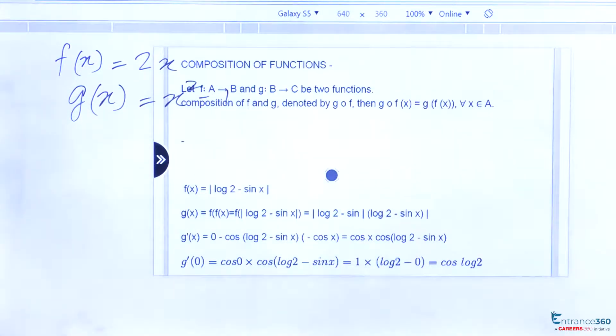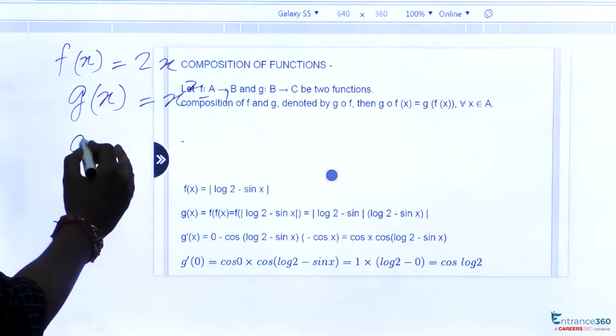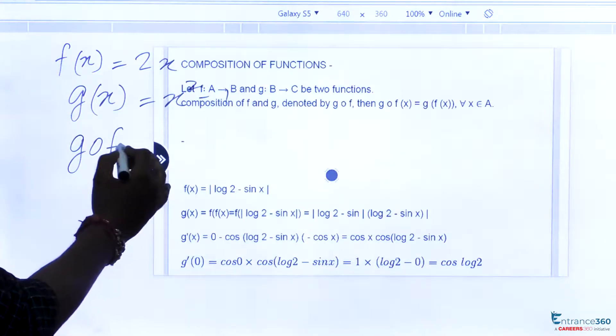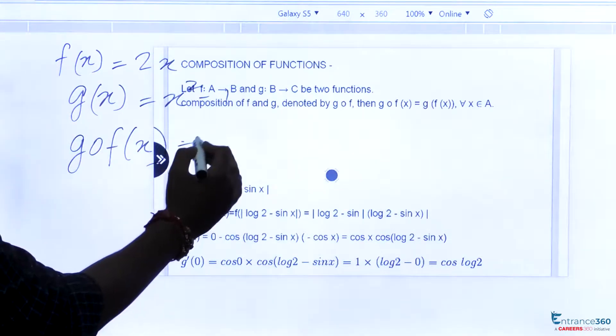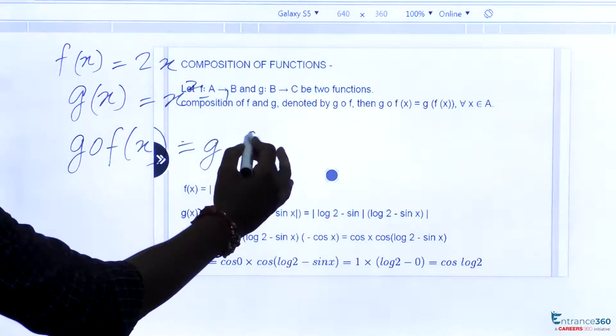Then to write the composition of both, our g of f is defined as gof(x), which is equal to g(f(x)).